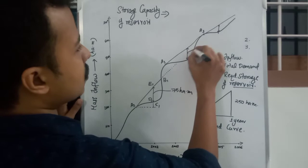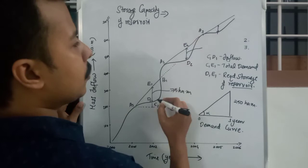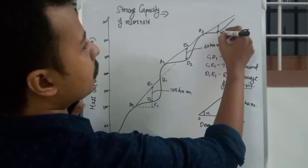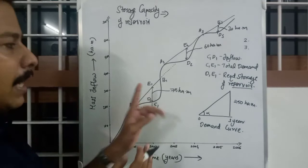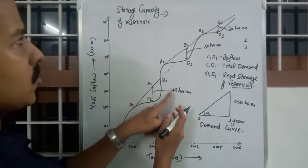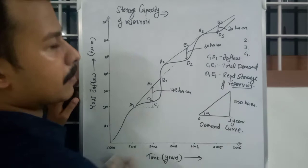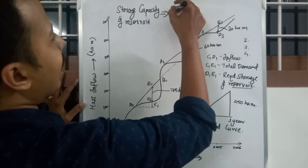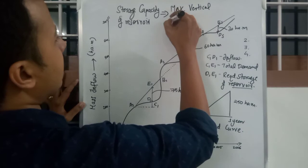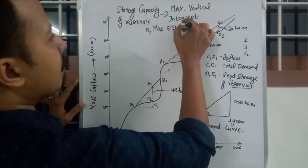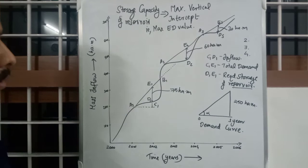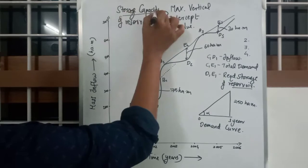Suppose d1e1 is 75 hectare meters, d2e2 is 60 hectare meters, and d3e3 is around 30 hectare meters — all assumed values. Considering all those years, the maximum value is taken as the storage capacity. So the storage capacity of the reservoir equals the maximum vertical intercept, that is the maximum ed value.